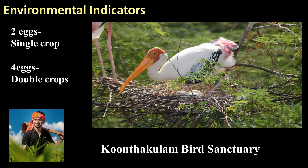Some birds are considered environmental indicators. The colorful bird you can see on the screen is the painted stork. It usually lays two to four eggs. When they lay four eggs, that means that year they will receive good rains. If the bird lays only two eggs, the farmers will not get much rain. So farmers can observe the number of eggs of the painted stork and accordingly decide whether to go for a single crop or double crops.